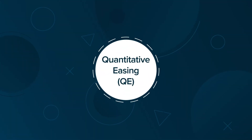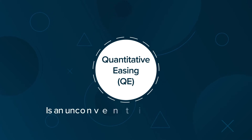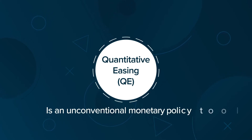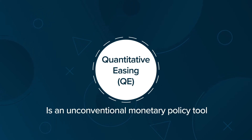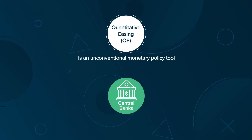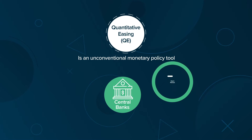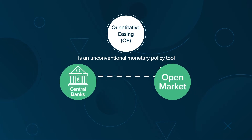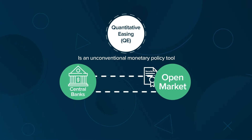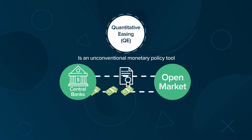Quantitative easing, commonly referred to as QE, is an unconventional monetary policy tool of central banks where the central bank buys securities from the open market to inject cash into the economy.